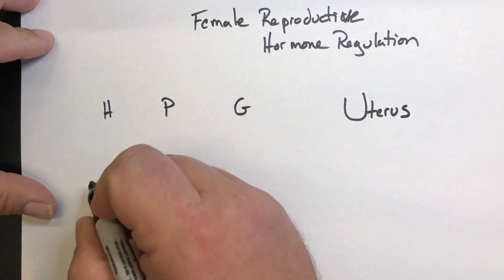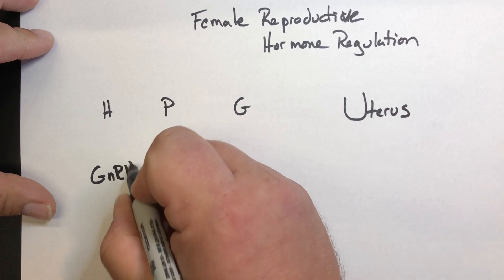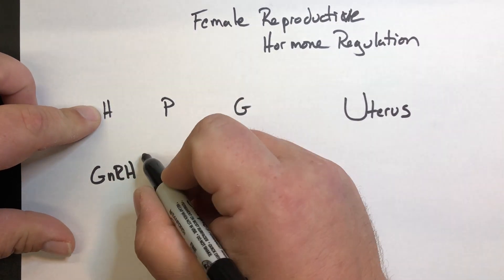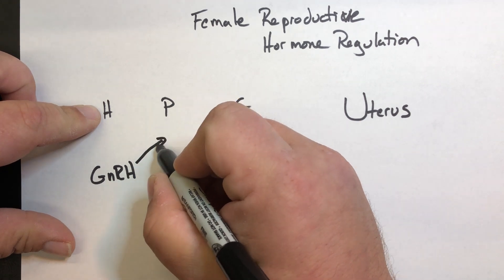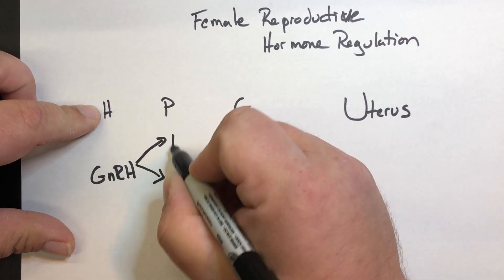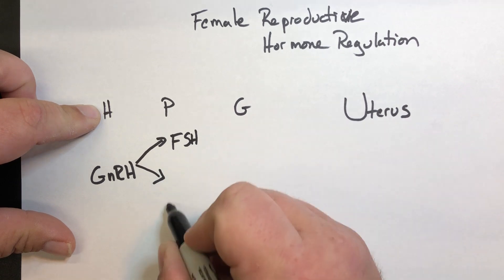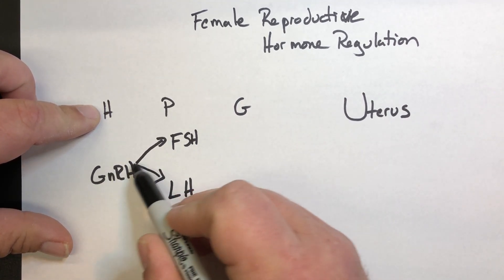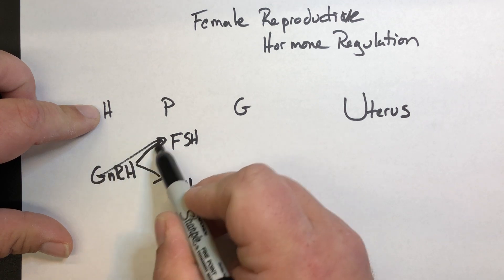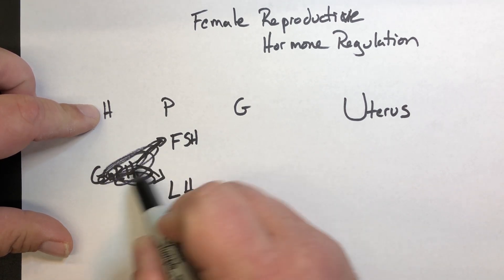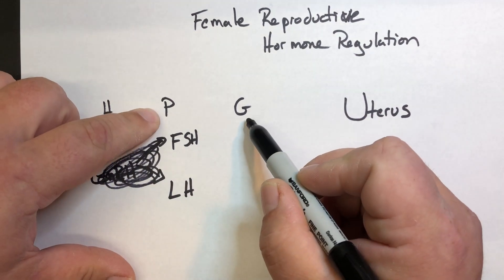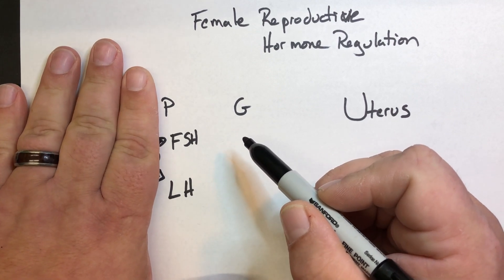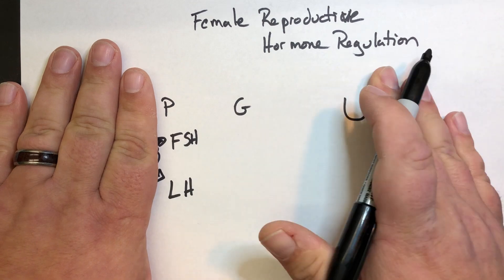We still see GnRH. GnRH is the hypothalamic hormone which targets the anterior pituitary, causes the release of FSH and LH. But it's not that this doesn't exist over here. It's just that the regulation is more between the gonad and the pituitary in the female. So we're not going to ignore that that exists. We're just going to pay attention more from pituitary on.